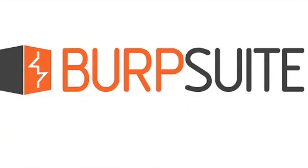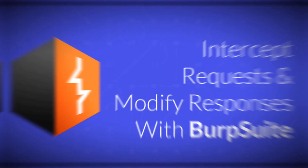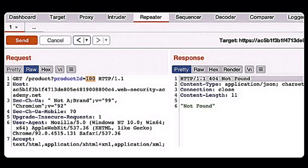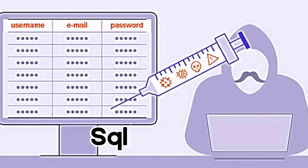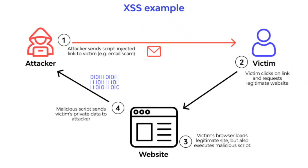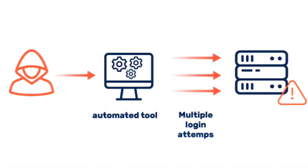With Burp Suite, we can read HTTP and HTTPS traffic, intercept it, and even modify it. Using it, we can also perform attacks like SQL injection and cross-site scripting. On top of that, it can be used for OTP bypass and password brute force attacks.